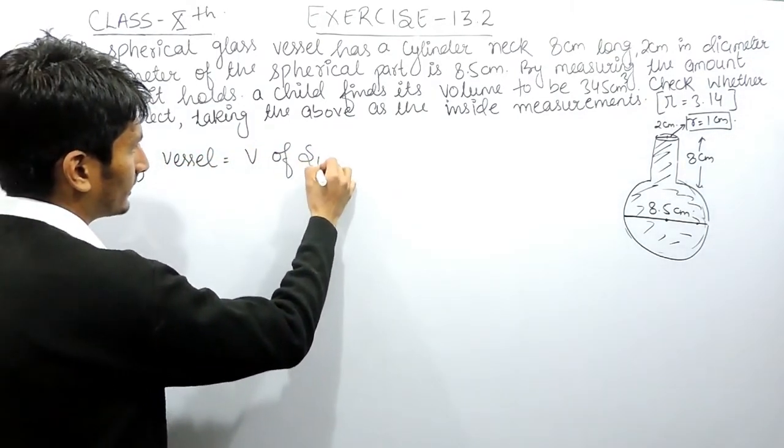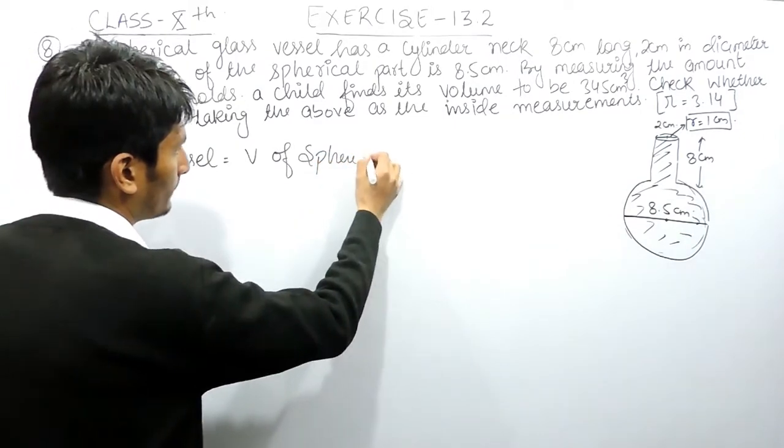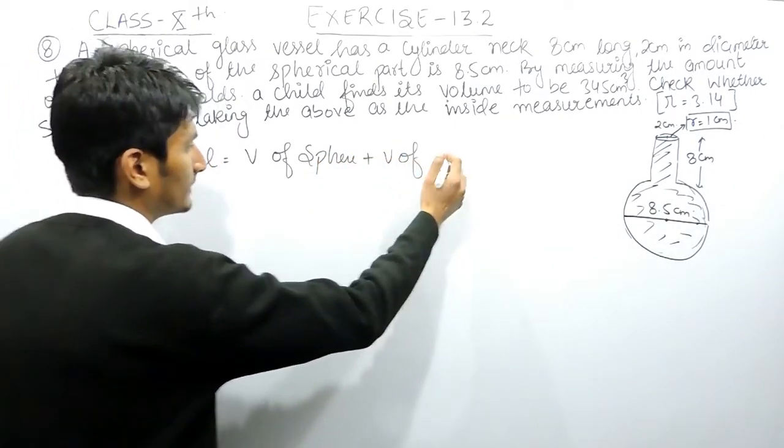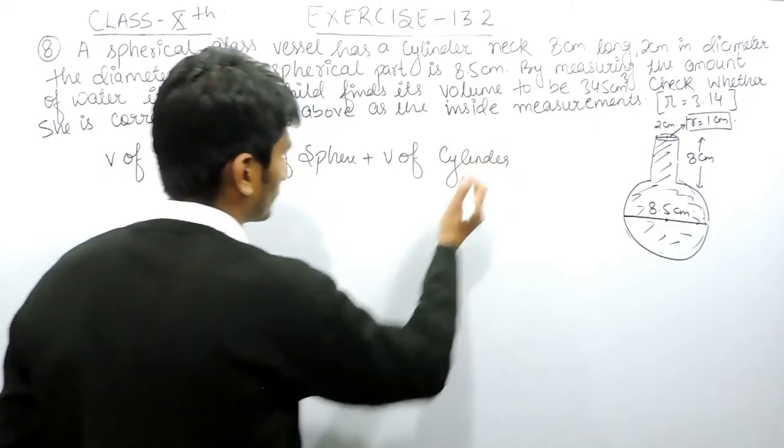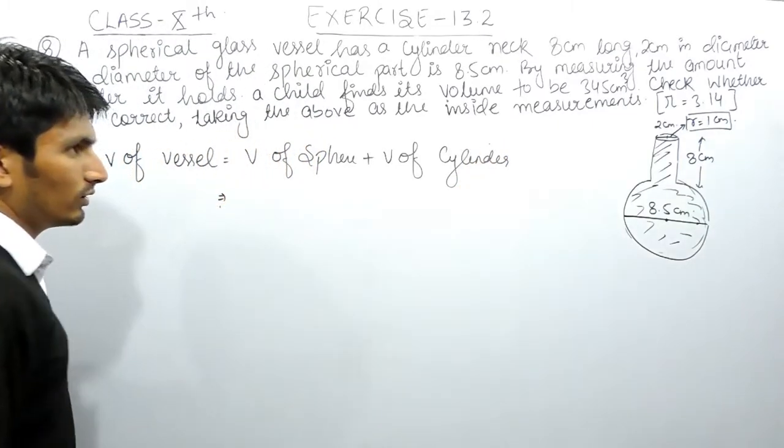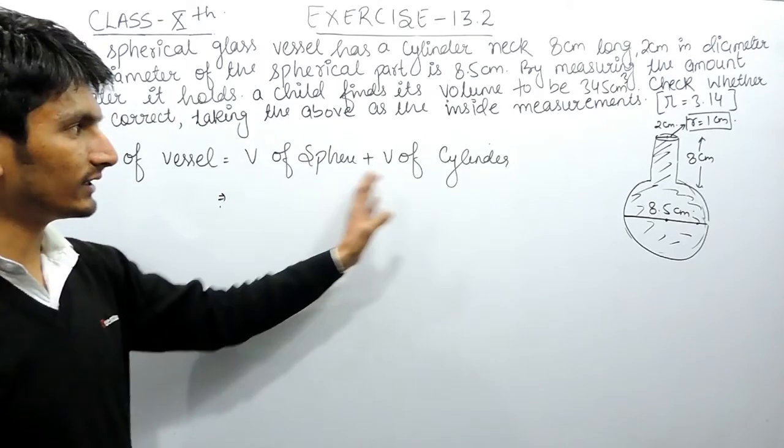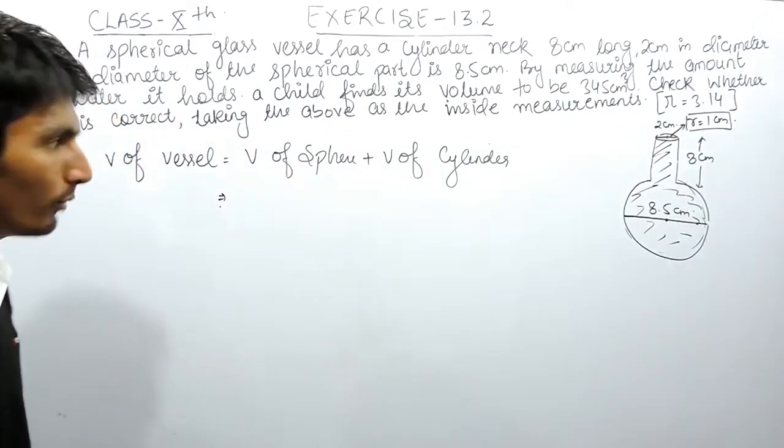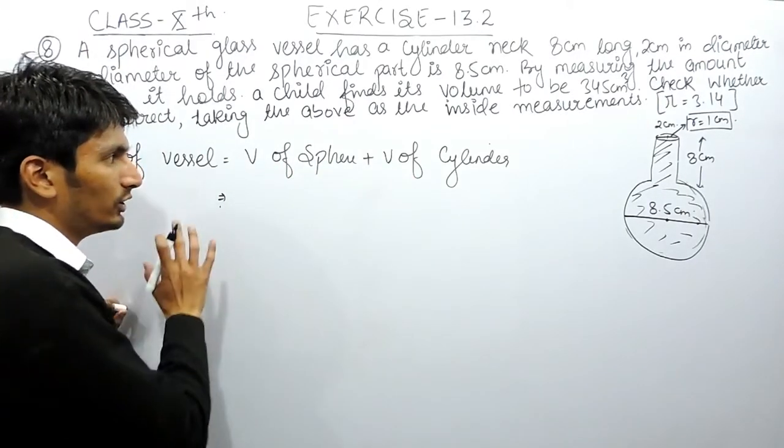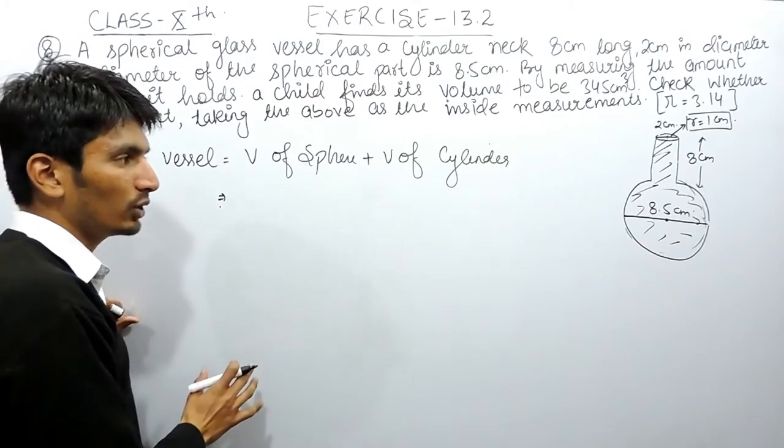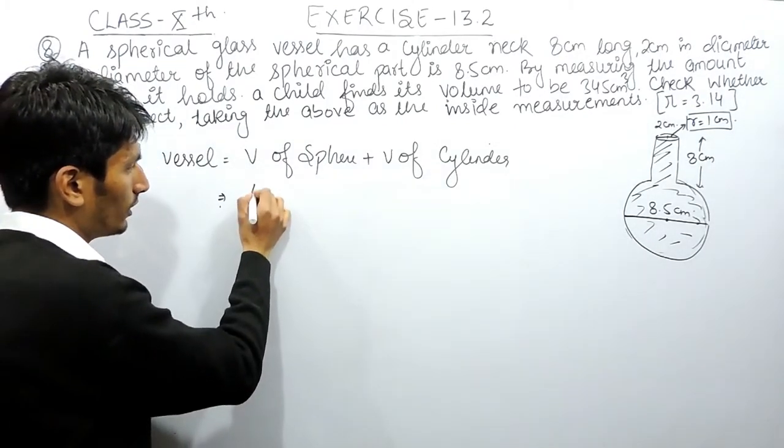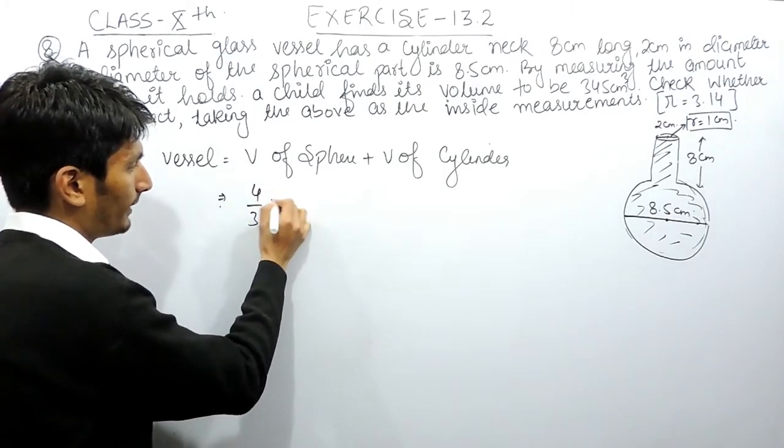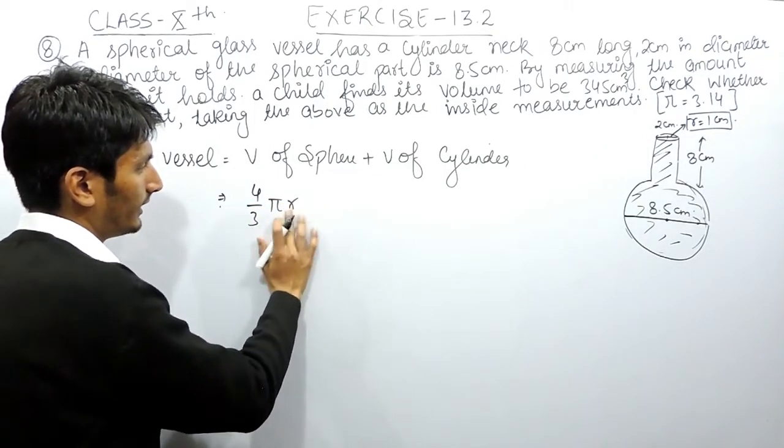I think you get clear how this formula is formed. Now if you know the formula you can substitute here and you will get your answer. The volume of this sphere is 4 by 3 pi R cube.